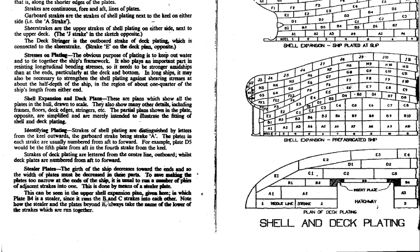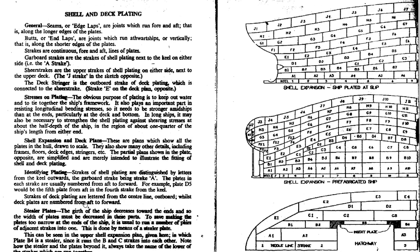This can be seen in the upper shell expansion plan shown here, in which plate B4 is a steeler. Plate B4 is getting narrower — the plate width has decreased drastically. This means the width of the vessel is decreasing, so the girth of the ship is decreasing, and thus the plate dimensions also have to decrease. You can see that B and C strakes have both become one, and that plate is known as the steeler plate.